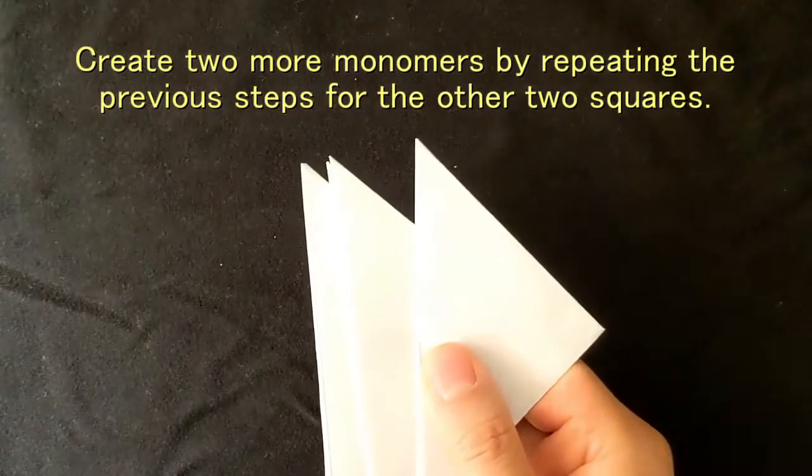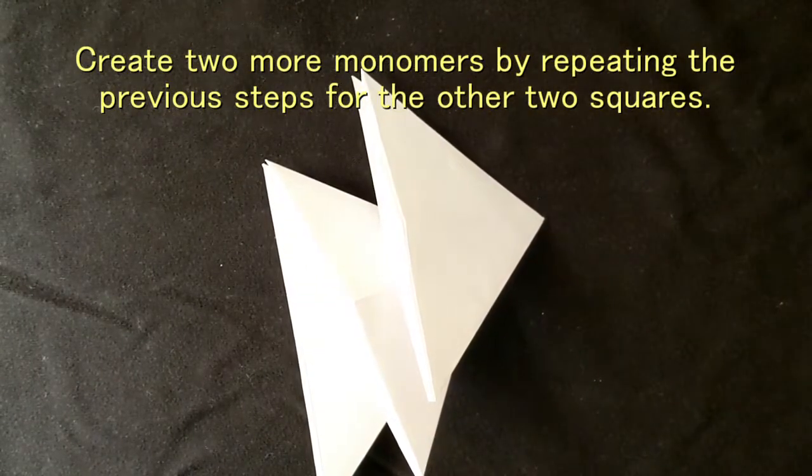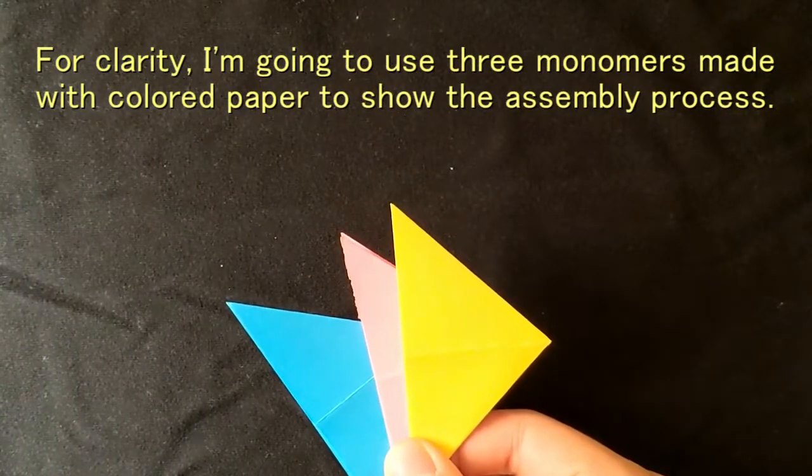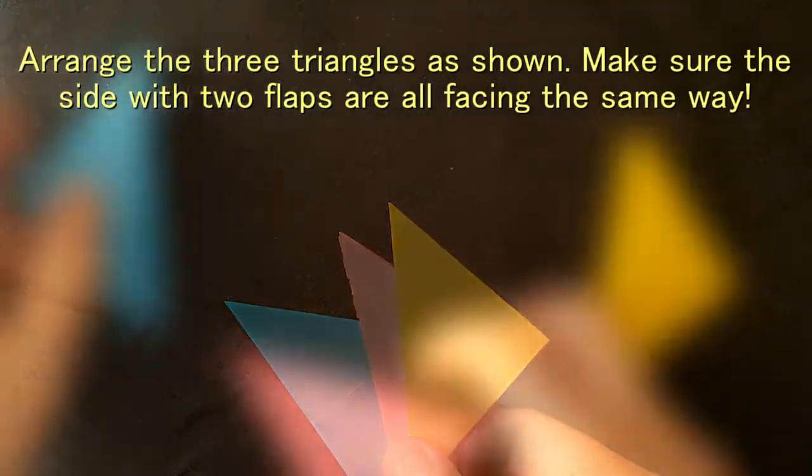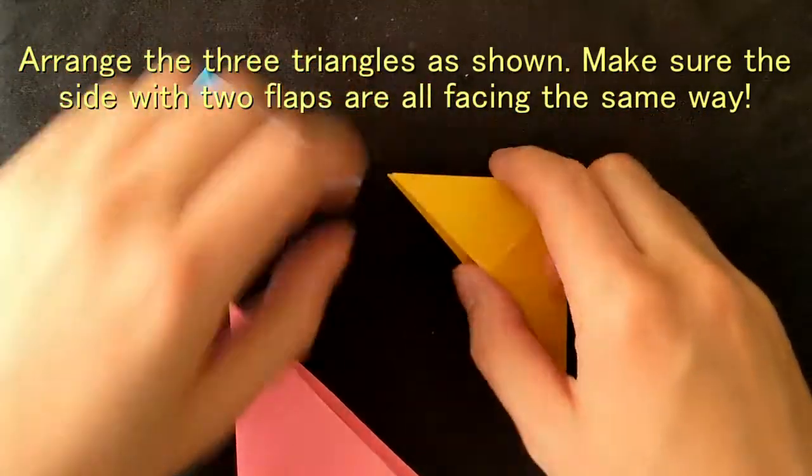Create two more monomers by repeating the previous steps for the other two squares. For clarity, I'm going to use three monomers made with colored paper to show the assembly process. Arrange the three triangles as shown. Make sure the sides with two flaps are all facing the same way.